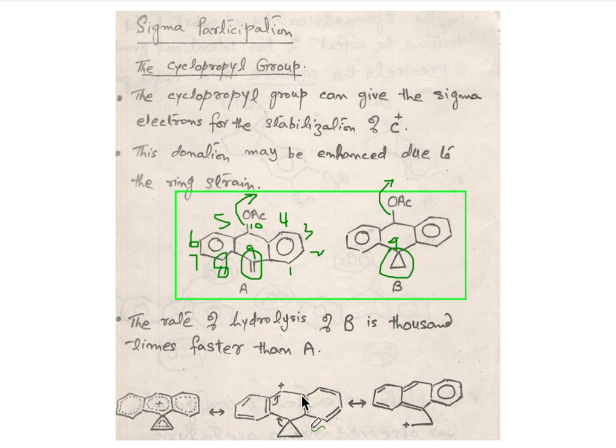This is very apparent that this difference is due to involvement of cyclopropyl group in compound number B. As you can see in following resonating structure, due to the formation of carbocation in compound B, the carbocation is stabilized by sigma participation of all this cyclopropane ring.